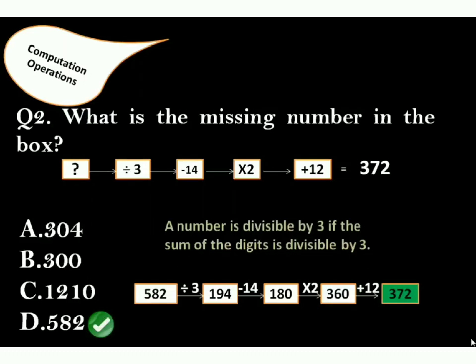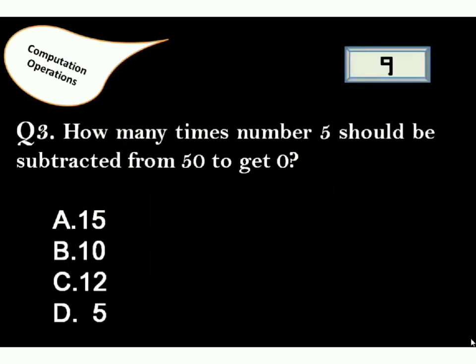Next question. Question 3: How many times number 5 should be subtracted from 50 to get 0? Correct answer is option B, because 10 times 5 equals 50. Next question.